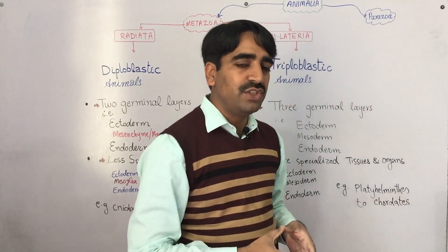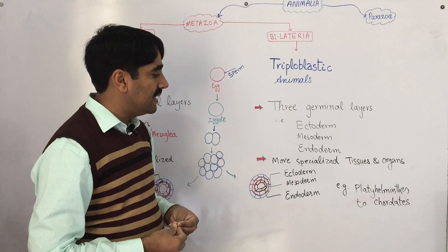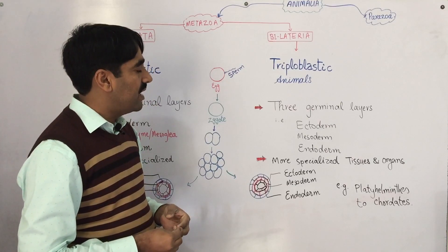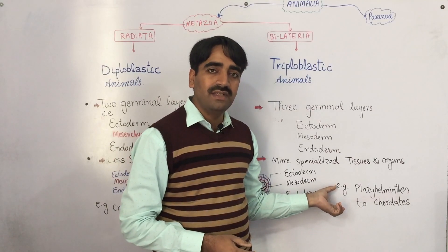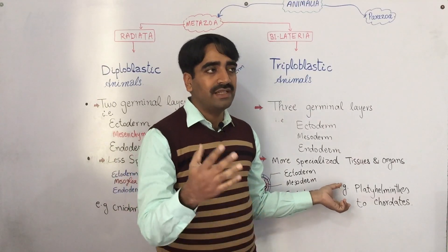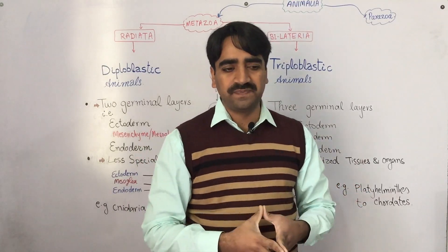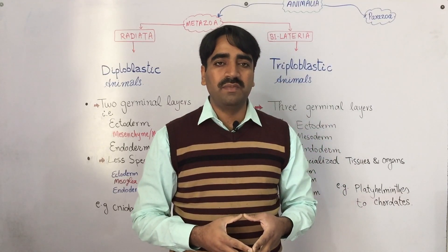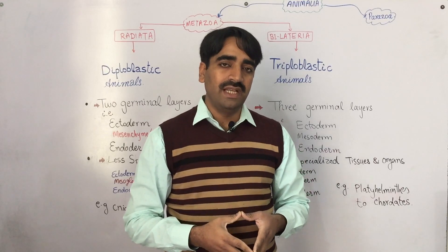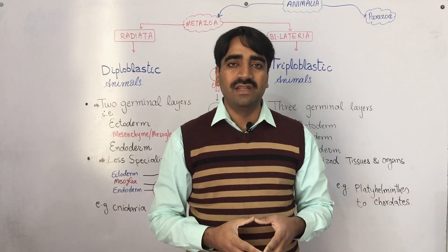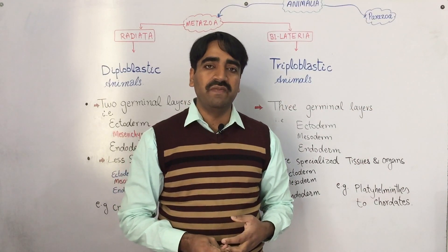These are the two groups of animals based on the number of germinal layers. The phyla belonging to the triploblastic group range from Platyhelminthes to Chordates. Sponges (Porifera) are not categorized into either group because they are not specialized into any germinal layers — they are simply associations of different cells.